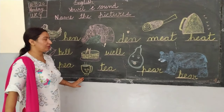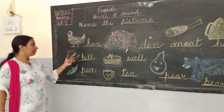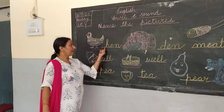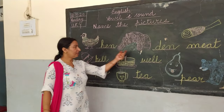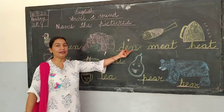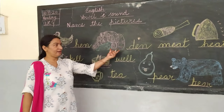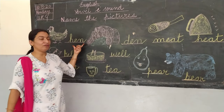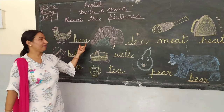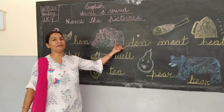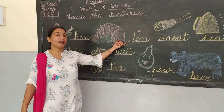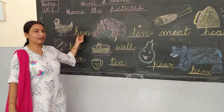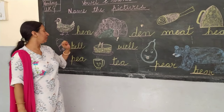Now see all these pictures together. See here — this is hen, H-E-N, and this is den. They have the same sound. Here we have rhyming words — pen, den, hen. These are rhyming words.